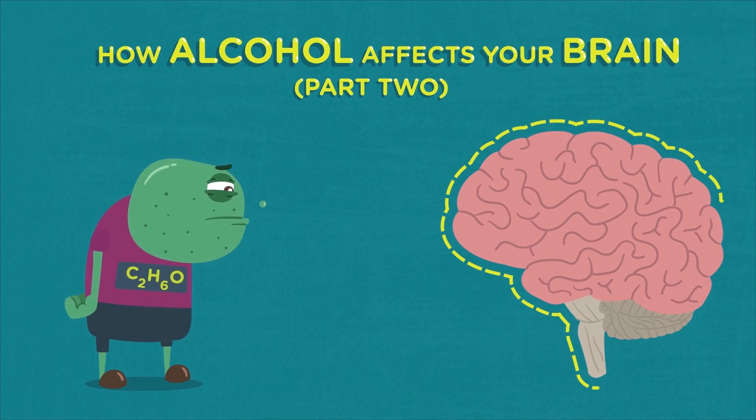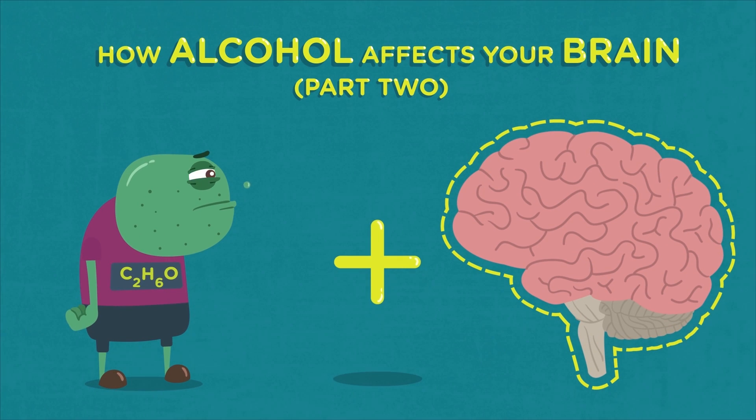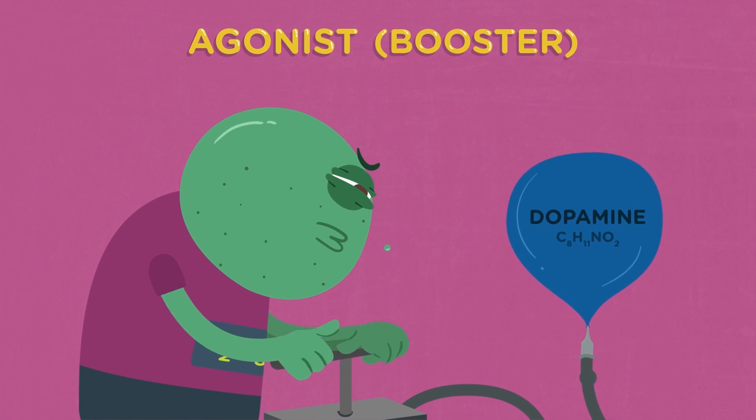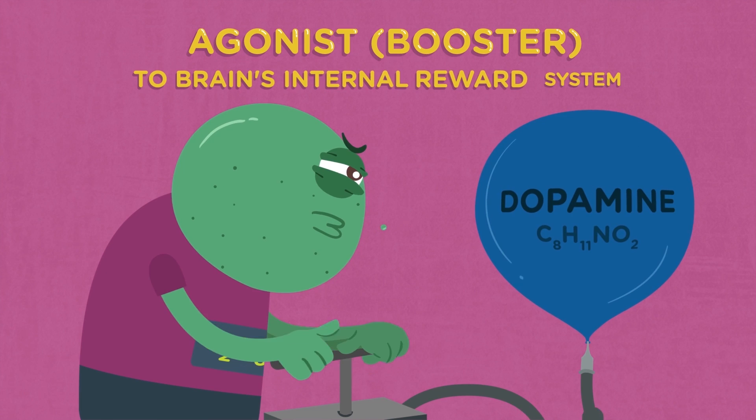Now let's see what happens when you introduce alcohol to this finely tuned system. To start, alcohol acts as an agonist or booster to certain chemicals in the brain's internal reward system.